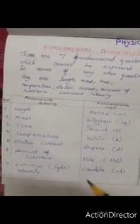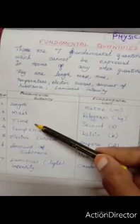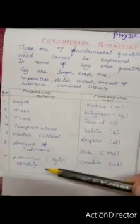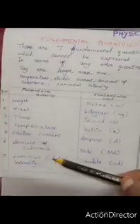There are seven fundamental quantities: length, mass, time, temperature, electric current, amount of substance, and luminous intensity. They have fundamental units.